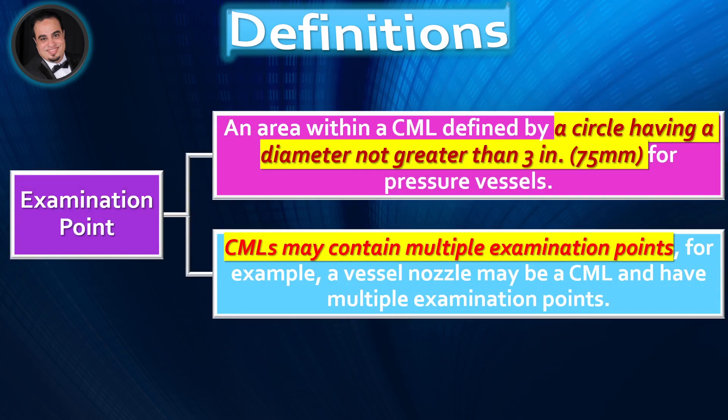An Examination Point is an area within a CML defined by a circle having a diameter not greater than 3 inches per pressure vessels. CMLs may contain multiple examination points; for example, a vessel nozzle may be a CML and have multiple examination points.